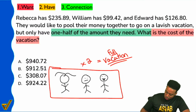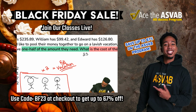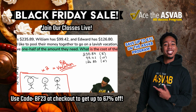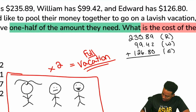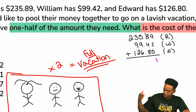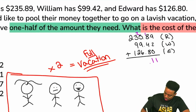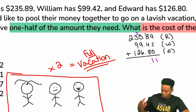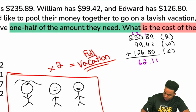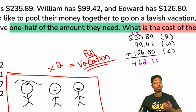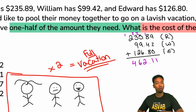Now you know what the numbers mean — they represent what each person has. So let's add them up: $235.89 for Rebecca, $99.42 for William, and $126.80 for Edward. Adding these together: 9+2=11, 8+4+8=20 carry the 1, 5+9+6+2=22 carry the 2, 3+9+2+2=16 carry the 1, giving us $462.11. But is that the cost of the vacation? No.